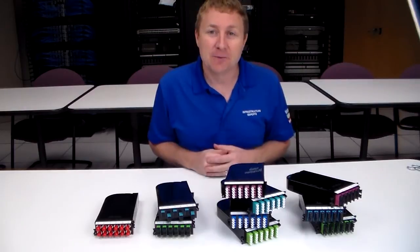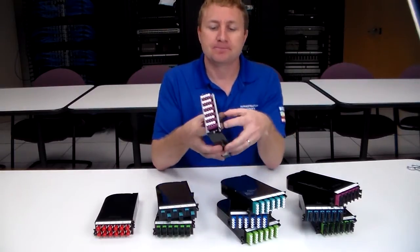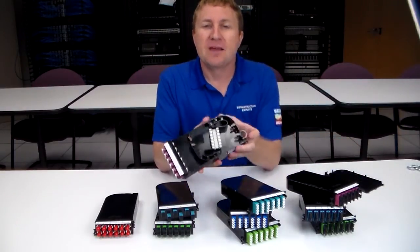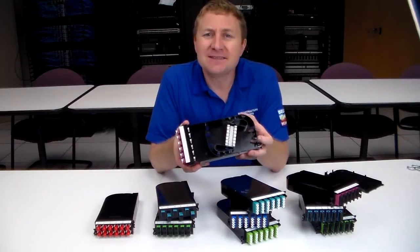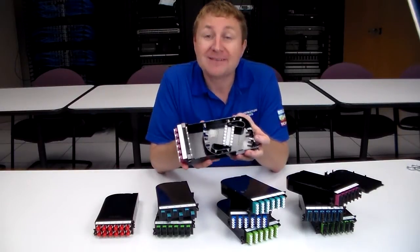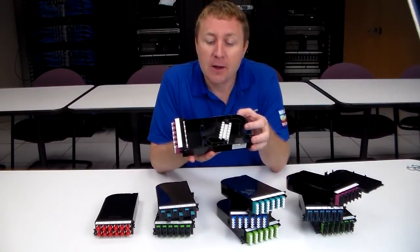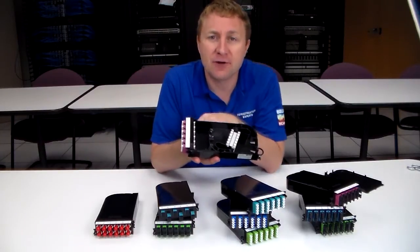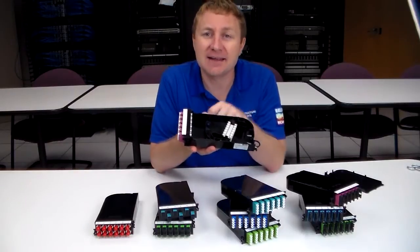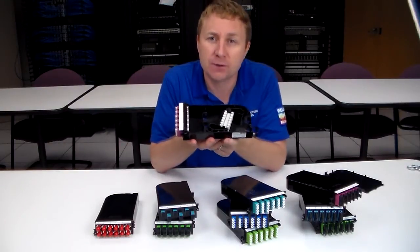So what is a splicing cassette you may ask? Well it's quite simple. It's a cassette that's going to go inside a patch panel. A very simple patch panel lets us reduce the complexity. It provides adapters in the front and allows you to manage your slack inside the cassette as well as hold your splice holder.